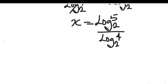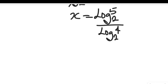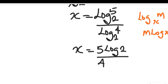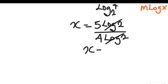Now recall the law of logarithms: if you have log of x^m base x, that gives us m log x. Applying that here, we'll have x equal to 5 log 2 divided by 4 log 2. Log 2 is common and cancels, so finally x is equal to 5 divided by 4.